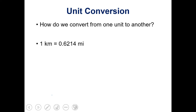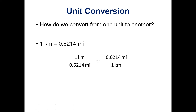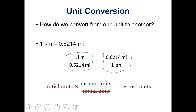For example, with the conversion one kilometer equals 0.6214 miles, I can write that as one kilometer over 0.6214 miles, or I can write it as 0.6214 miles over one kilometer. If I were going from miles to kilometers I would use the first form to cancel out miles and end up with kilometers, or vice versa. We start with our initial units, make sure they are on the bottom of the next step, and the desired units are on top so we end up with the desired units at the end.